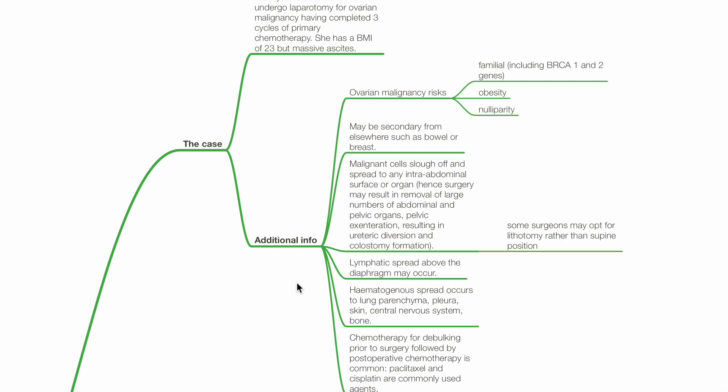Malignant cells slough off and spread to any intra-abdominal surface or organ. Surgery may result in removal of large number of abdominal and pelvic organs, pelvic exenteration, resulting in ureteric diversion and colostomy.